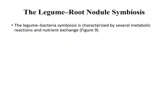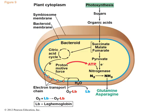The legume-bacteria symbiosis is characterized by several metabolic reactions and nutrient exchange. These include photosynthesis, formation of sugars and organic acids such as succinate, malate, fumarate, and pyruvate. Nitrogenase enzymes are found in these associations and are responsible for nitrogen fixation.